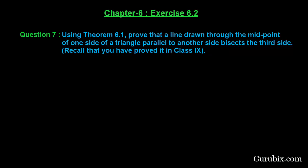Welcome friends, let us solve question number 7 of exercise 6.2 of chapter 6. The question says using theorem 6.1, the basic proportionality theorem or Thales theorem, prove that a line drawn through the midpoint of one side of a triangle parallel to another side bisects the third side.